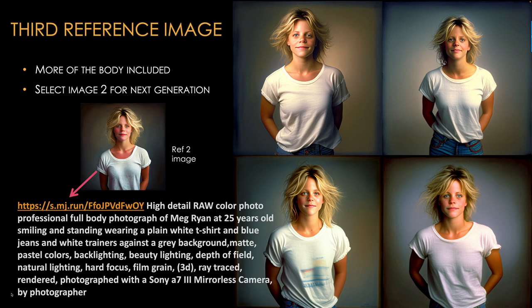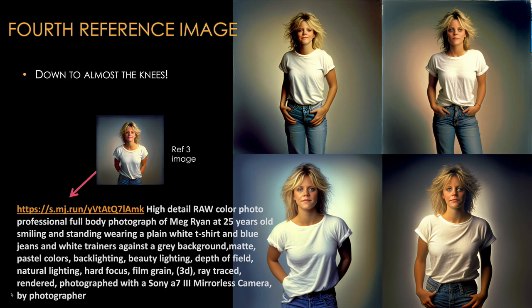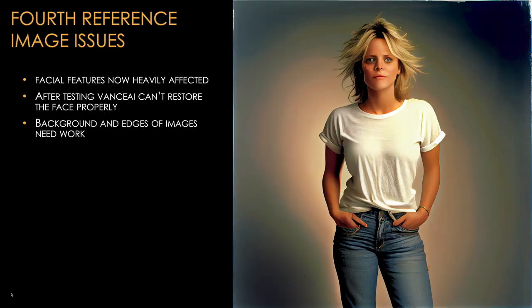This second reference image is used in the next MidJourney prompt to gain a proper mid-shot or even a cowboy shot where we can see the character's waist. Then we come to the fourth reference image. At this stage it's harder in MidJourney to gain a character with consistent detailed facial features when getting to a medium full shot — just above the character's knees. You'll also notice the background has altered somewhat as we iterate with successive reference images — it's not as plain grey as before, so watch out for this in the iterative process.